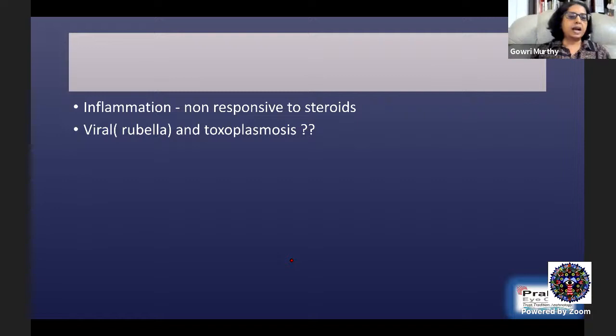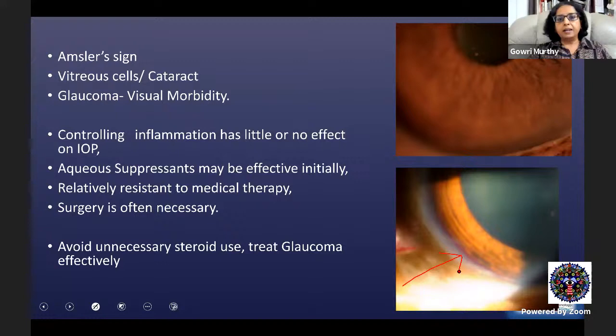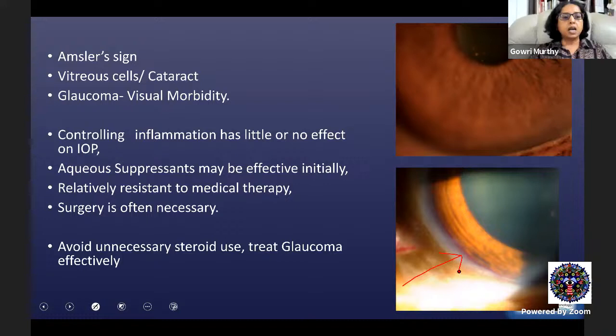Cataract is also associated, and secondary open-angle type of glaucoma is the one which is associated with Fuchs. The inflammation is typically non-responsive to steroids. Viral causes like rubella and even toxoplasmosis have been implicated in causation. Another finding is Amsler's sign — fine new blood vessels in the angle that can bleed when there is pressure on the eye or sudden decompression, such as during gonioscopy or paracentesis for AC-TAP PCR. Vitreous cells and cataract are definite features, and glaucoma is the main cause of visual morbidity in this type of uveitis.